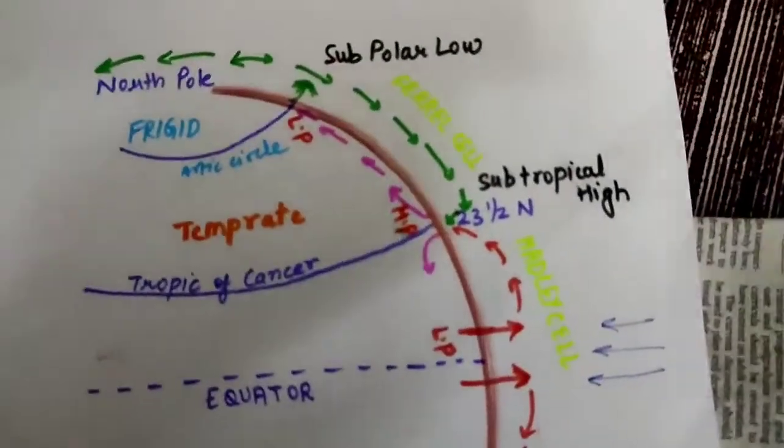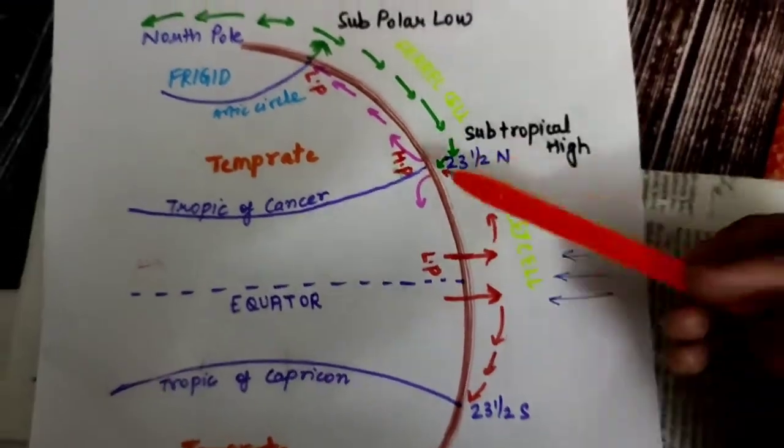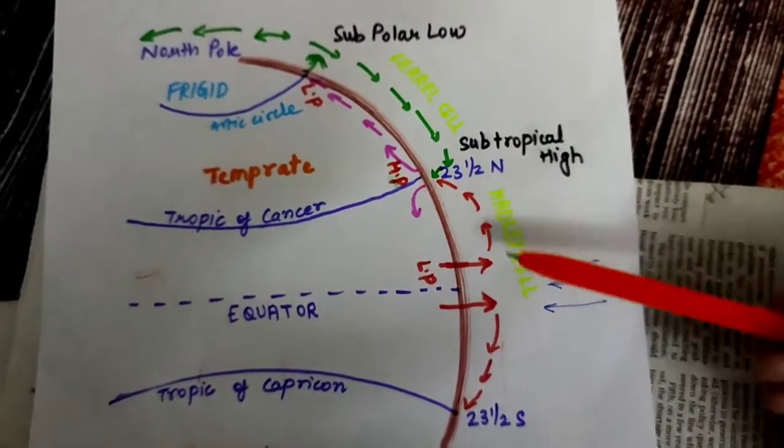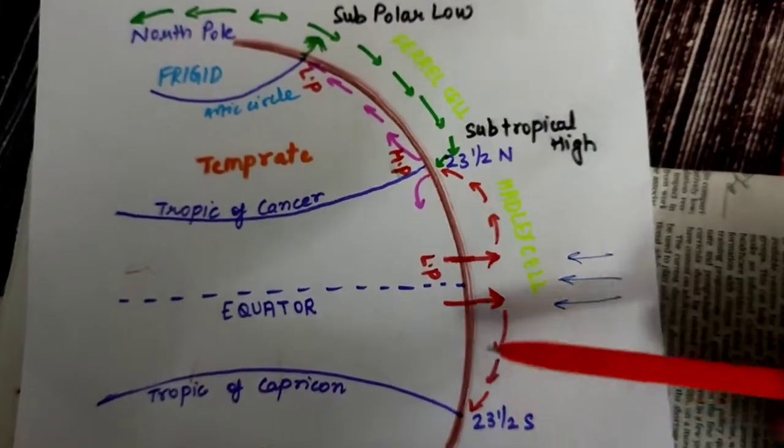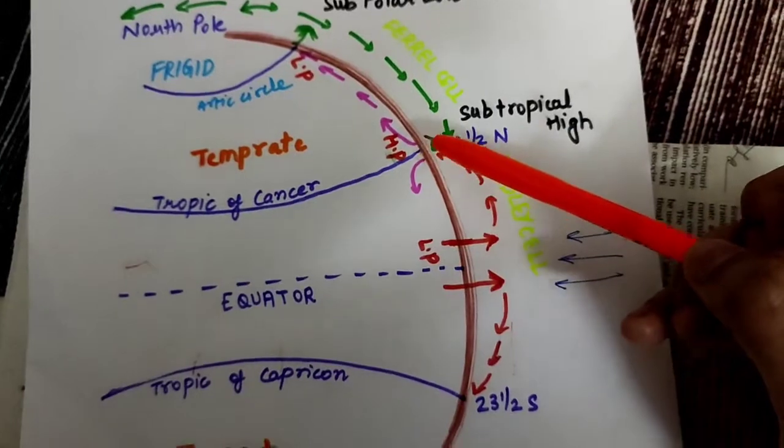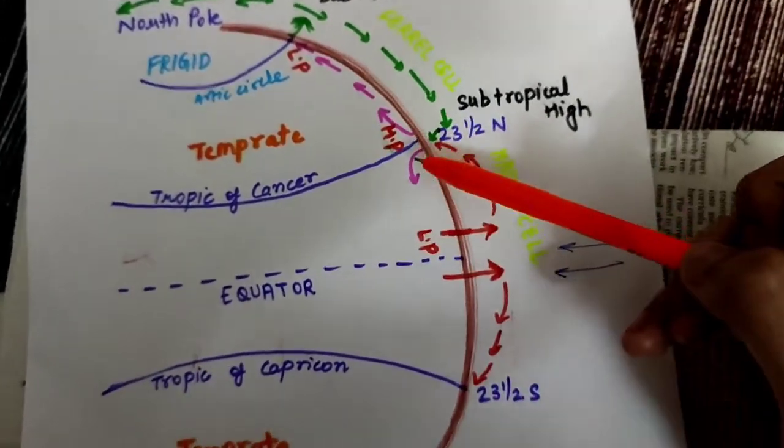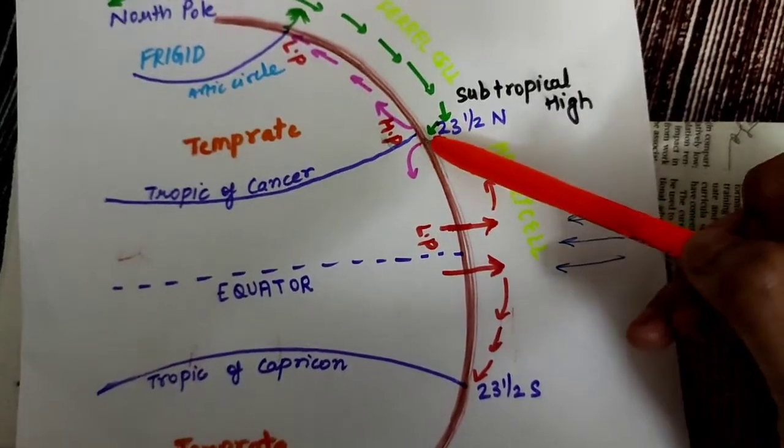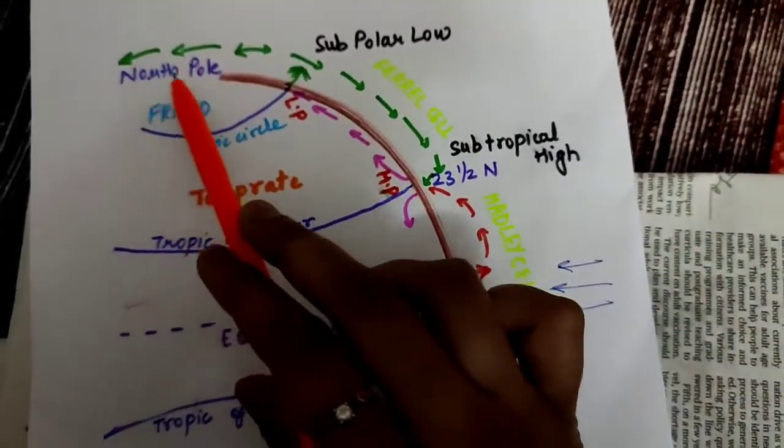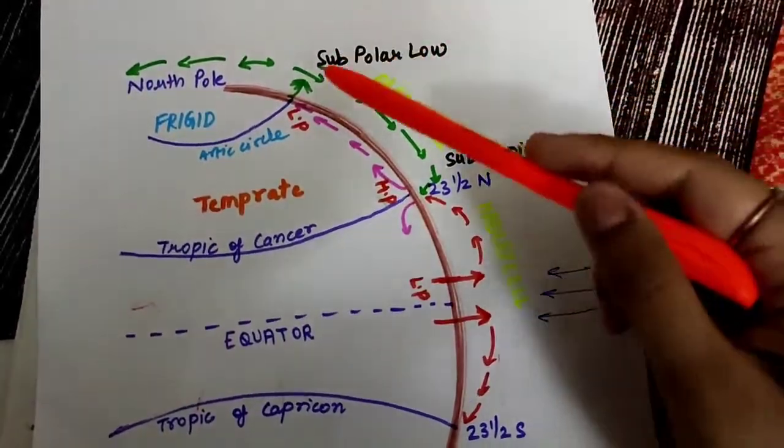I'll focus more here. The hot air is traveling in both directions—traveling towards 23 and a half north and 23 and a half south respectively. It is moving towards Tropic of Cancer. This is the subtropical zone. Now what is happening from the other side? This is the frigid zone.